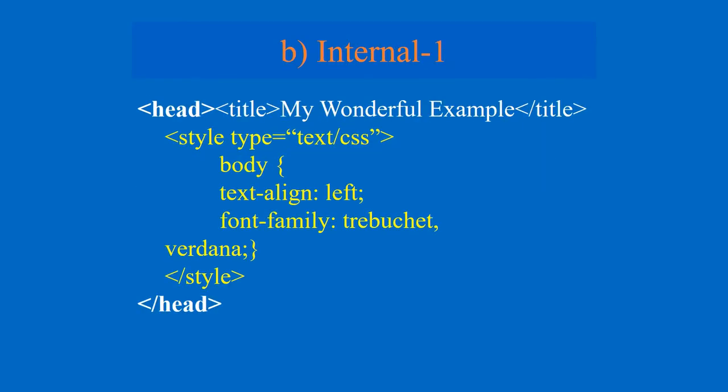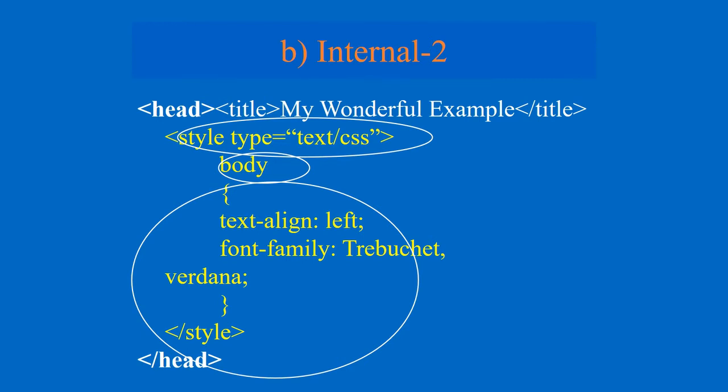So next is the internal CSS. You can say internal CSS or document type CSS - both are the same. That should be after opening the head and before closing the head - we have to write the syntax of the document type or internal CSS. You can see the yellow color example - that is the example of internal CSS. In this example you see there are three parts highlighted. The syntax: whenever you are writing after opening the head, that internal CSS, we have to write style type equal to text/css.